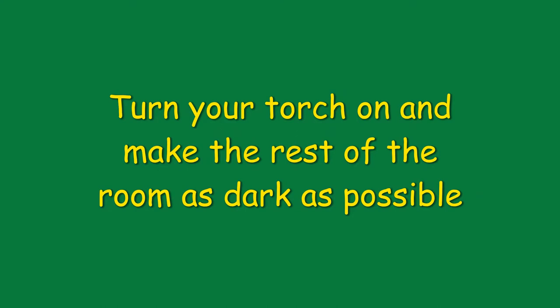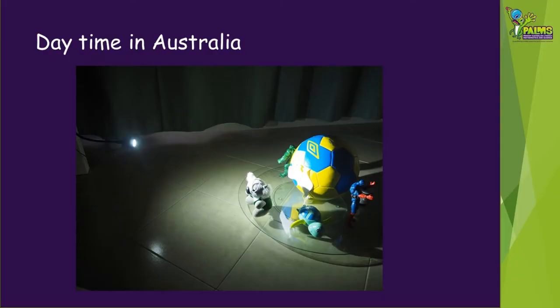Put your light source in a place so that the light shines directly onto one side of your model earth. Then make your room as dark as possible, closing your curtains and turning off the big light.